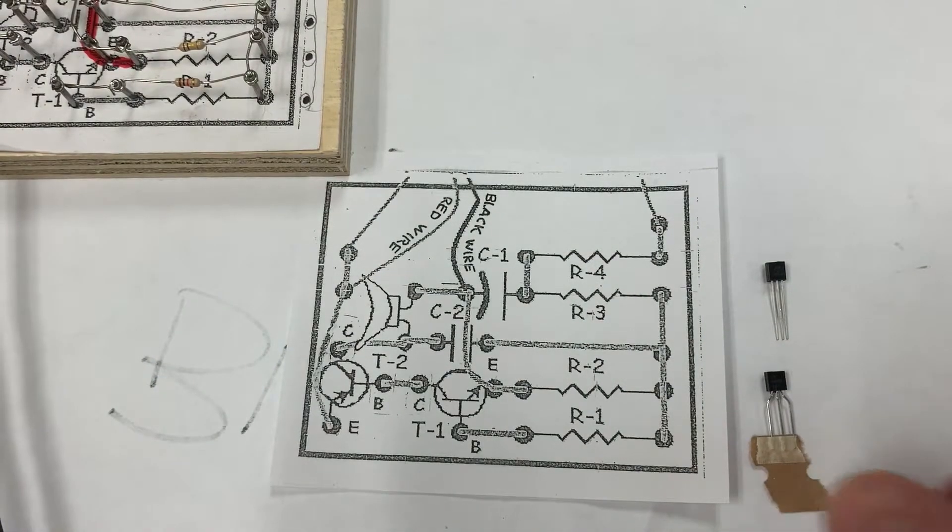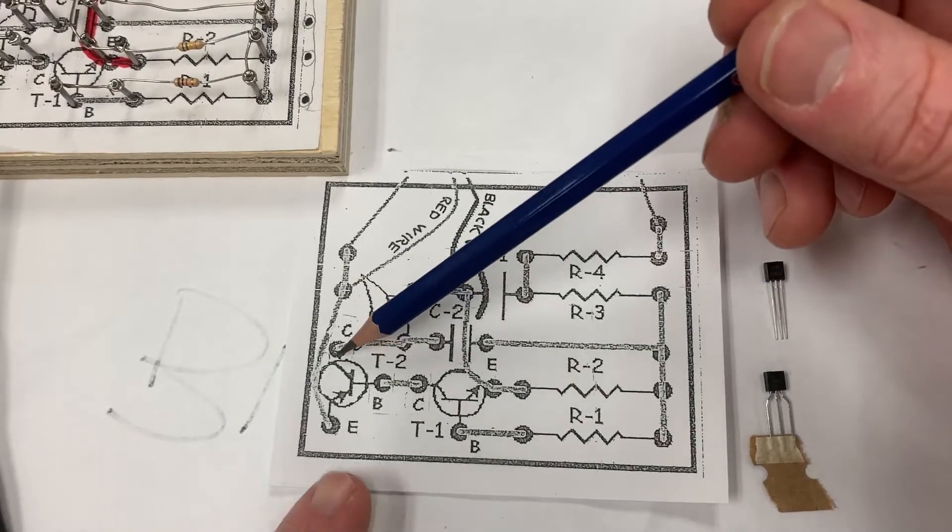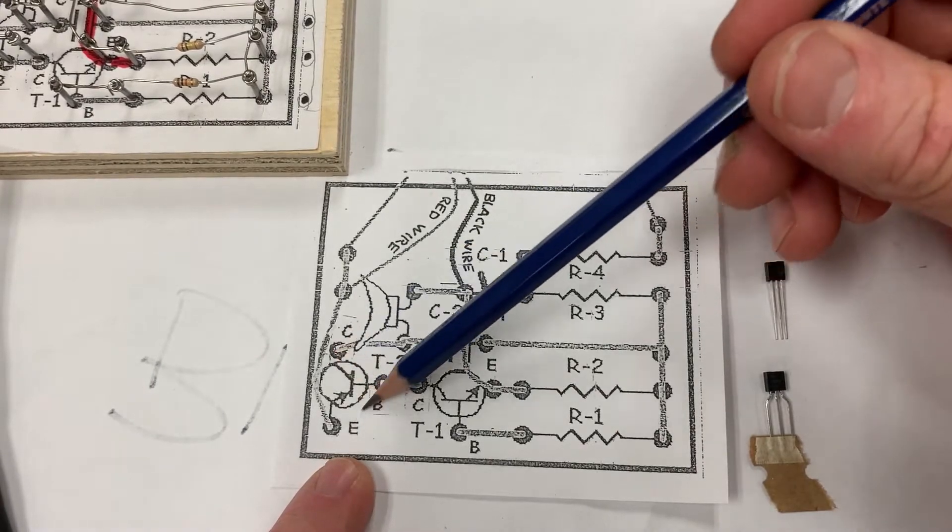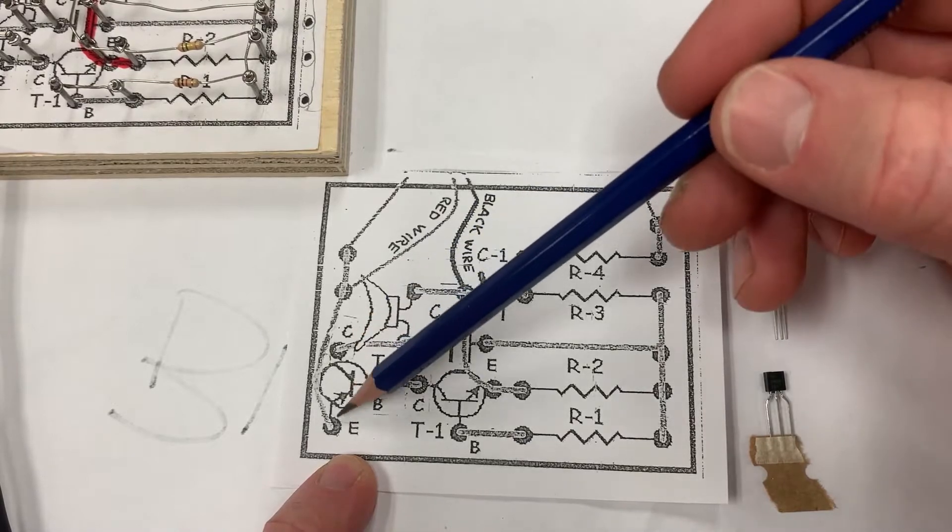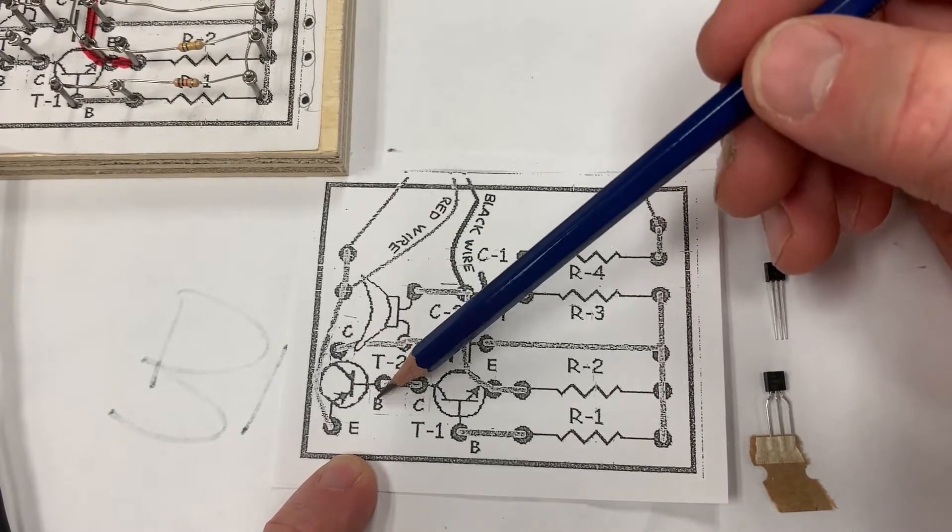3906 is transistor number 2. Transistor number 2 is over here. The symbol for the transistor is a circle, and around the outside of the circle there are nails that have letters: the letter C, letter B, and letter E.